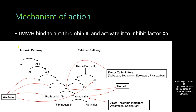The low molecular weight heparins bind to antithrombin 3 and activate it to inhibit the activated form of factor 10. Antithrombin 3 is a natural clotting inhibitor available in the blood plasma. When activated normally it works on multiple clotting factors, but when activated by low molecular weight heparins it works only on factor 10.